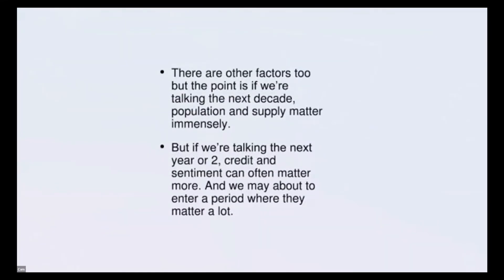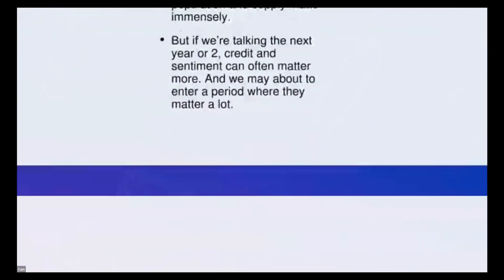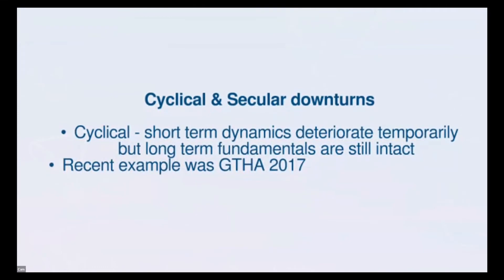There are other factors too, but the point is if we're talking the next decade, population and supply matter immensely. But if we're talking the next year or two, credit and sentiment can often matter more, and we may be about to enter a period where they matter a lot. There are two different types of downturns: cyclical downturns and secular downturns. A cyclical downturn is a short-term dynamic where short-term dynamics are deteriorating temporarily, but the long-term fundamentals are still intact.